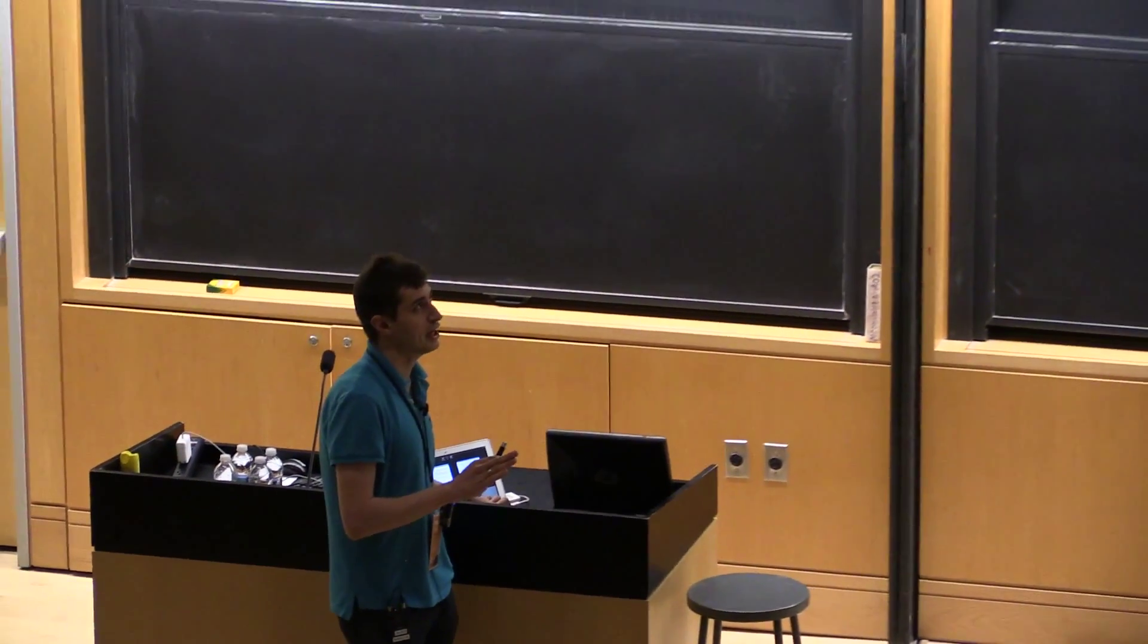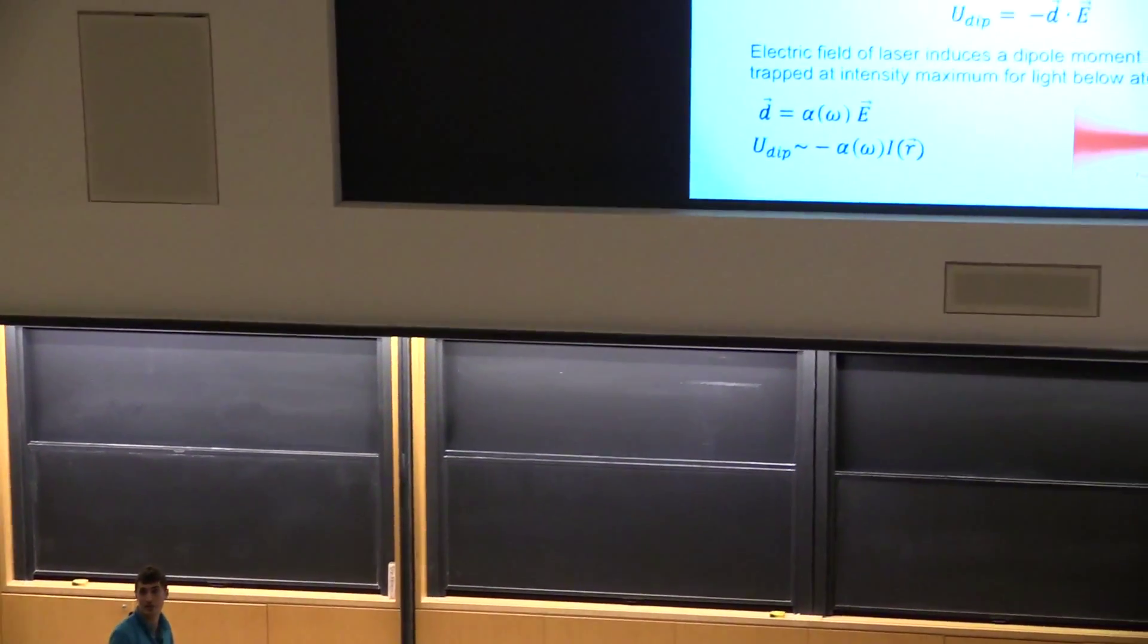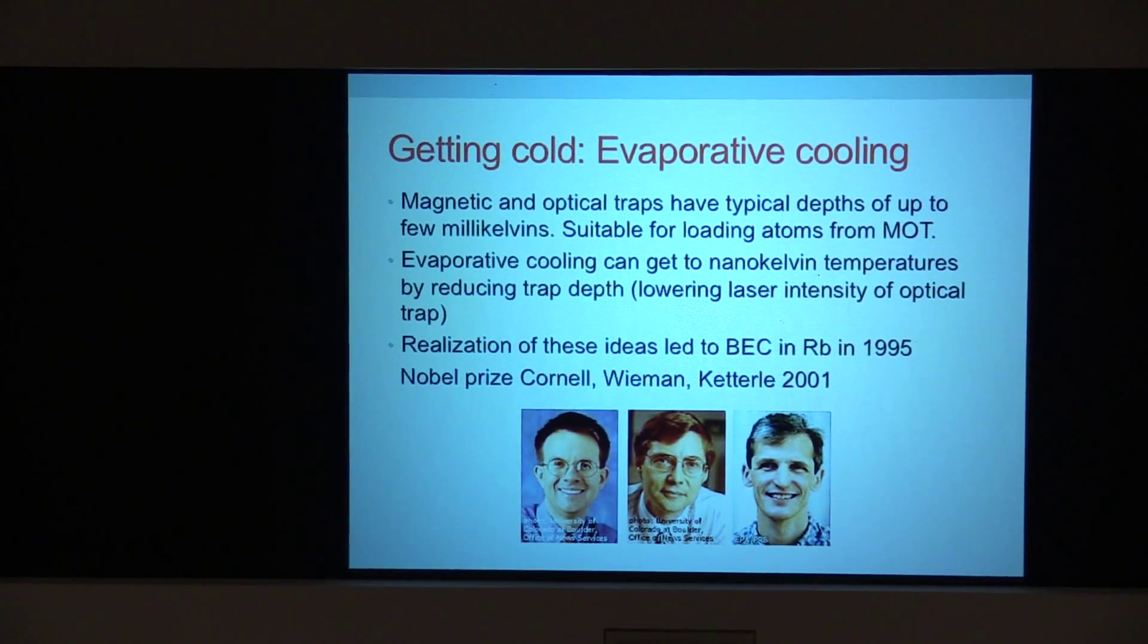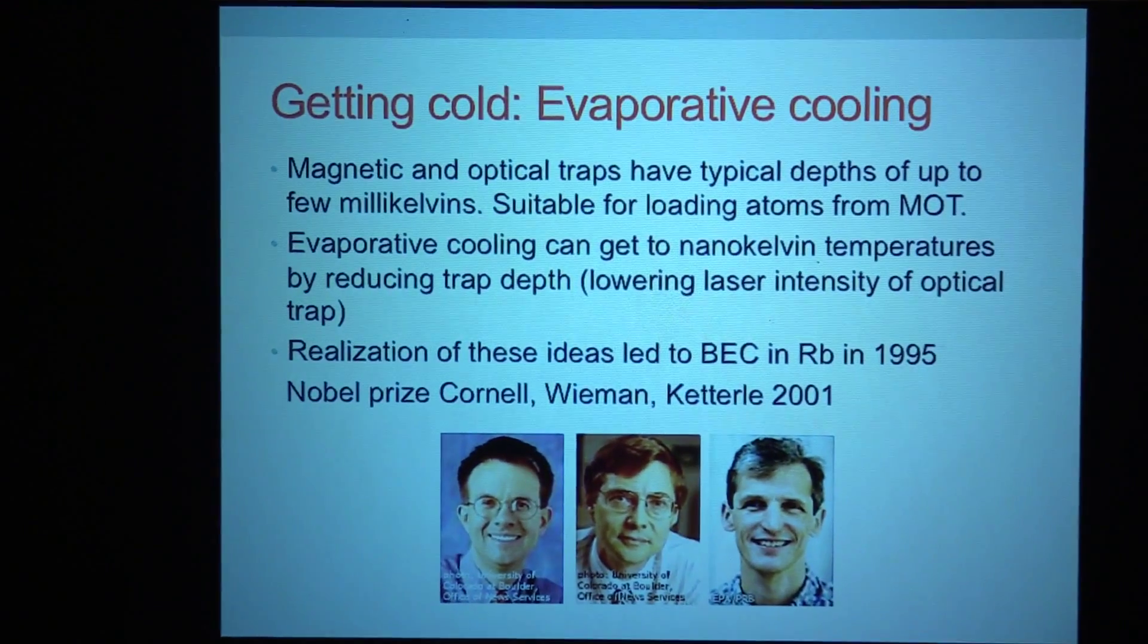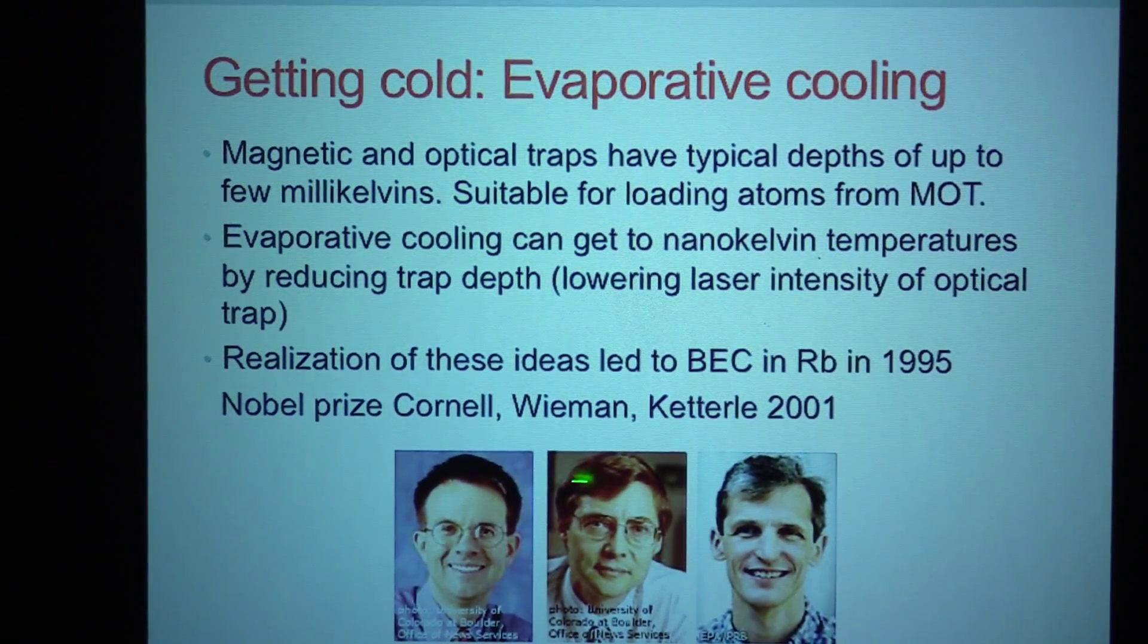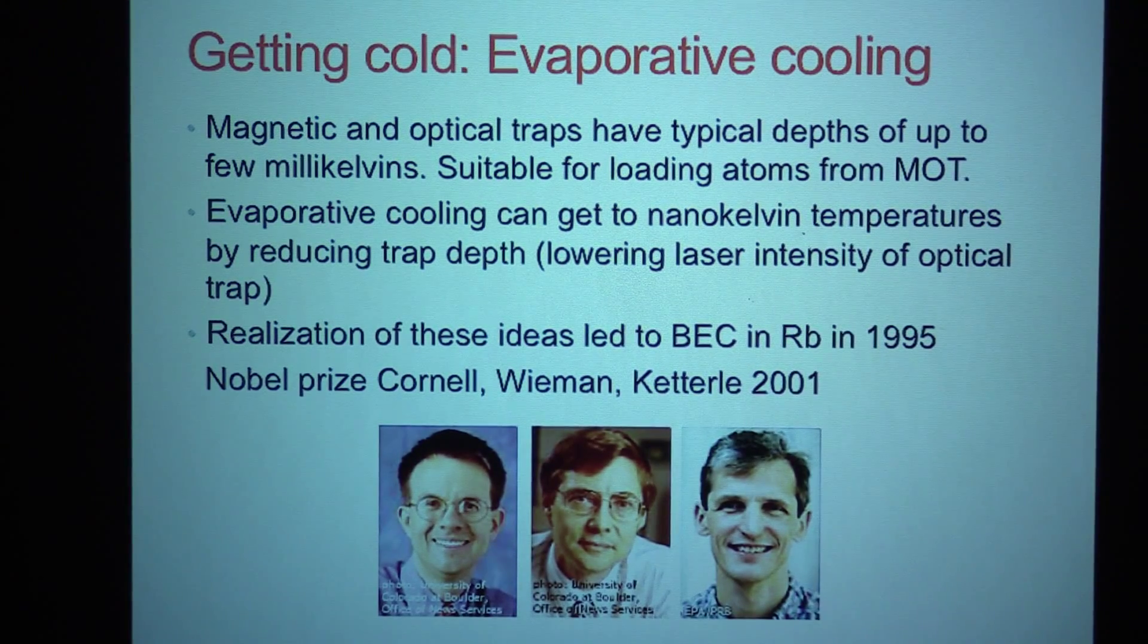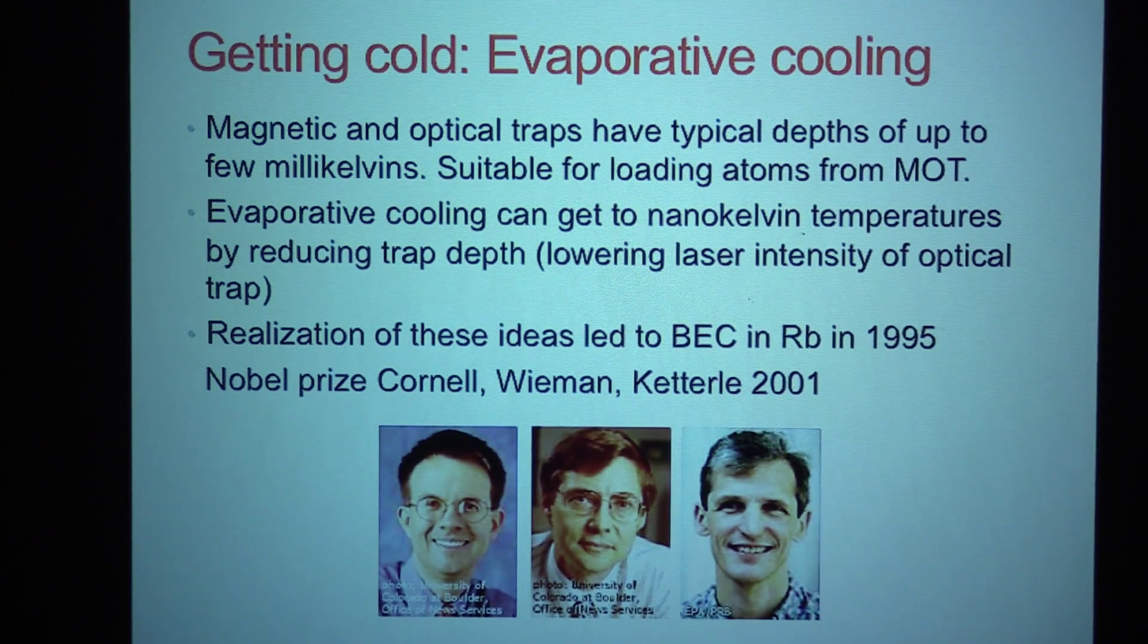Once we trap them in the dark, we can now reduce the depth of the trap to kick out the hotter atoms. For example, in an optical trap, all you do is turn down the light intensity. So there's a lower trap depth and the hot atoms escape. And through this evaporative cooling process, you can get down to these nanokelvin temperatures. So this sequence of combining first the laser cooling and evaporative cooling is the sequence that got these gentlemen here the Nobel Prize in 2001. These two here, Jella, Eric Cornell, and Carl Wieman, achieved the Bose-Einstein condensate of rubidium, and Wolfgang Ketterle at MIT achieved the Bose-Einstein condensate of sodium in 1995. And basically, using the exact recipe I've described so far.